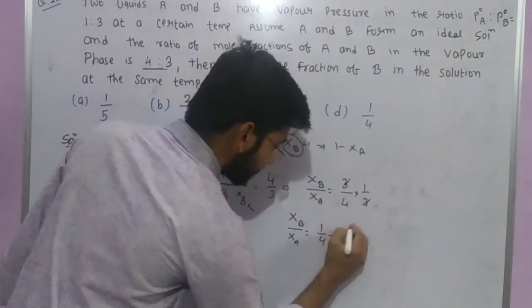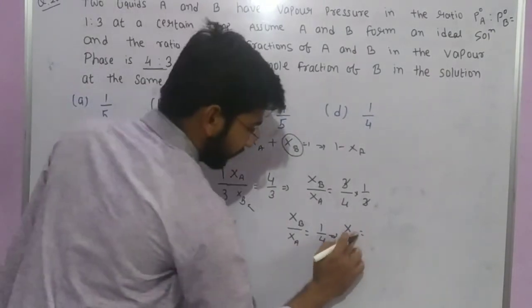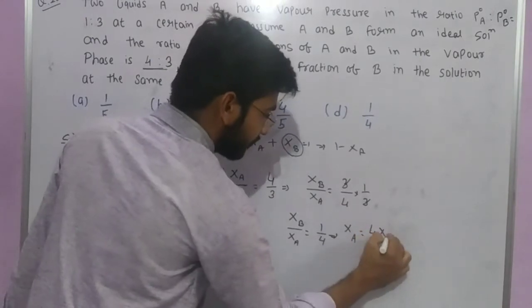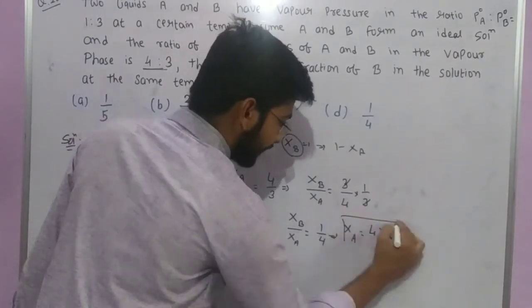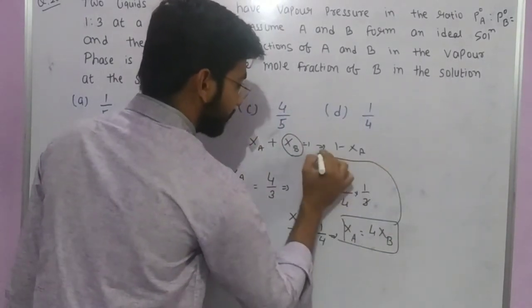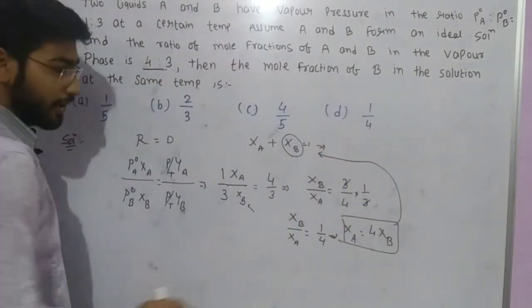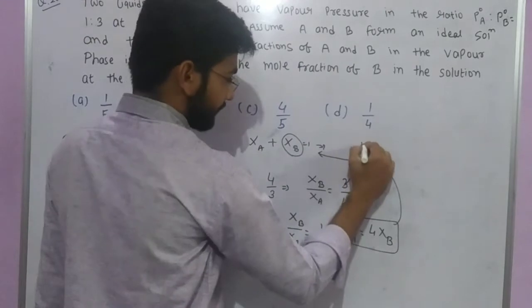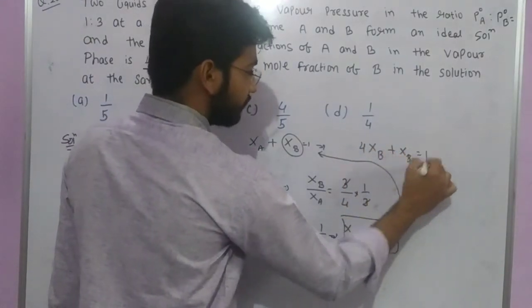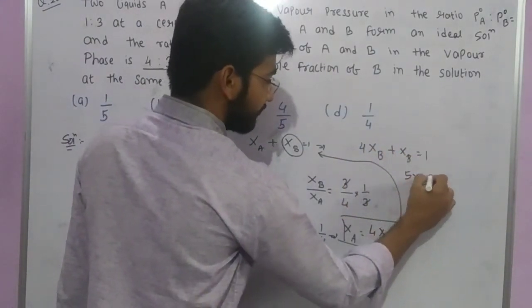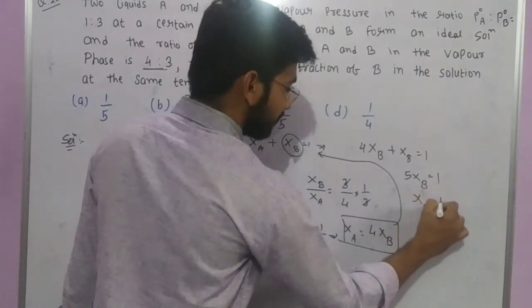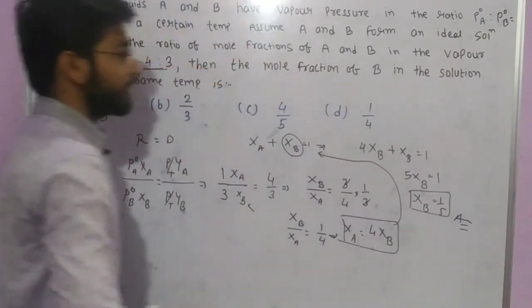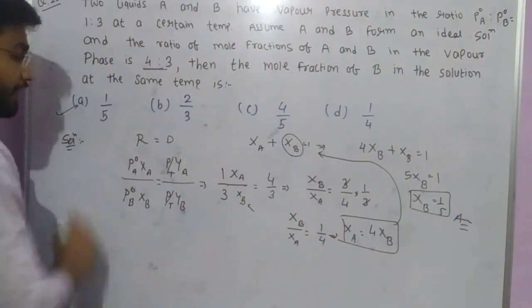From here X A is equal to 4 times X B. Putting this back, 4 X B plus X B is equal to 1, so 5 times X B equals 1. Therefore X B equals 1 upon 5. So here is your answer, and checking the options, option A is the correct option.